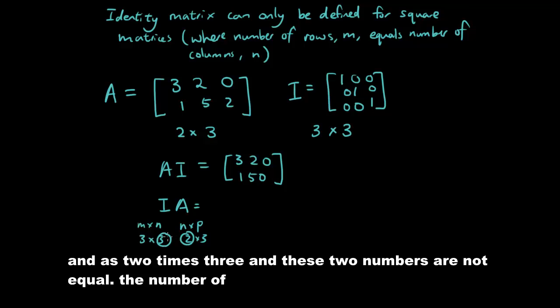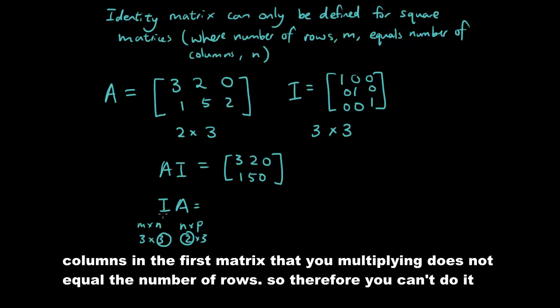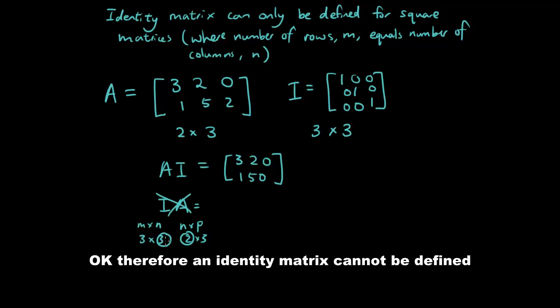Alright, the number of columns in the number of rows, so therefore you can't do it. Therefore an identity matrix cannot be defined for matrices that are not squared.